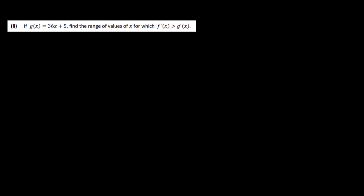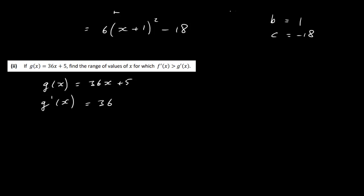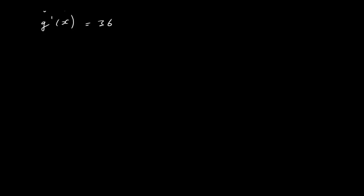Now let's look at part 2. We have g of x equal to 36x plus 5, and we need to find the range of values of x for which f prime x is greater than g prime x. Differentiating g of x gives g prime x equal to 36. So we want f prime x greater than g prime x, which means 6 times x plus 1 all squared minus 18 must be greater than 36.